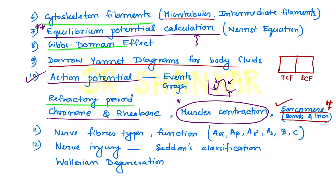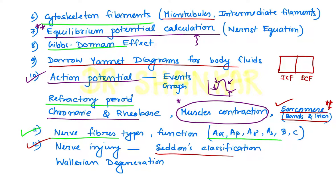Another thing you should know is nerve fiber types: A alpha, A beta, A gamma, A delta, B fiber, C fiber. What is slow pain, what is epicritic pain, what is fast pain, what are the functions of each type of fiber, and which fiber is more susceptible to pressure changes. Next, nerve injury is another important topic: Seddon's classification, Sunderland classification, nerve injury, Wallerian degeneration are also important topics.